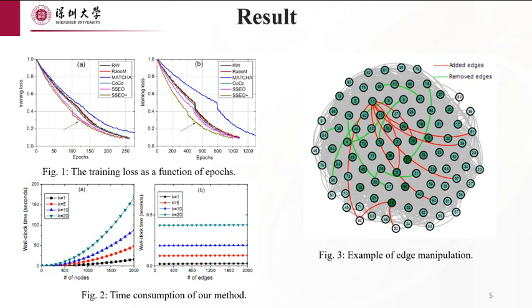Next, a brief presentation of our experimental results. As illustrated in Figure 3, we conducted edge addition and removal operations on the original network structure, with results depicted in Figure 1. These indicate that our proposed method, SSEO+, outperforms existing methods across all graph instances. Simultaneously, we conducted an analysis of the algorithm's time complexity, as illustrated in Figure B. Due to the computation being performed only once, the time overhead is negligible.